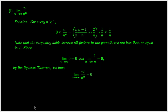We now work on question 5l. Using the definition of factorials, we can see the inequalities on the screen all hold for any n. Moreover, the limit of the sequences on the two ends are equal. By the squeeze theorem, we have the required limit.